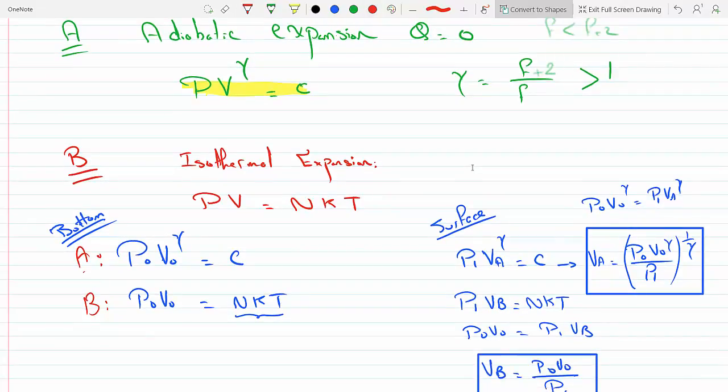When they rise to the surface, A will become P one times V A raised to the gamma equals C. So I equated them together and I solved for V A as a function of P zero, V zero, and P one.